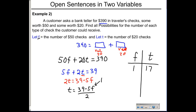Since we're dividing by 2, we increment F by 2 each time to keep results whole numbers. For F = 3: (39 − 15) / 2 = 24 / 2 = 12 — three $50 checks and twelve $20 checks. For F = 5: (39 − 25) / 2 = 14 / 2 = 7 — five $50 checks and seven $20 checks. For F = 7: (39 − 35) / 2 = 4 / 2 = 2 — seven $50 checks and two $20 checks.